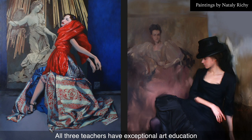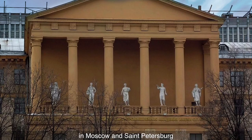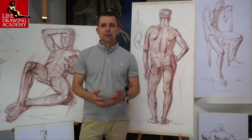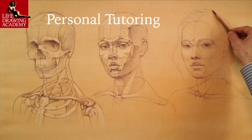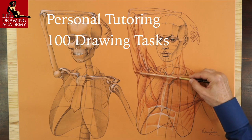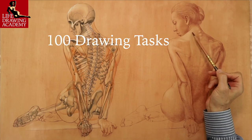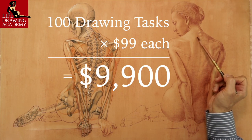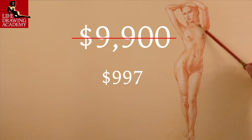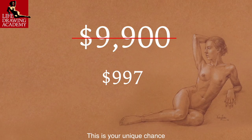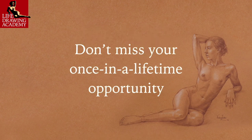All three teachers have exceptional art education and spent many years practicing and teaching art. The drawing techniques and methods taught are the same as students learn in the best art academies in Moscow and St. Petersburg. You can also apply for the Life Drawing Academy correspondence course for one-on-one personal guidance, 100 drawing tasks with in-depth instructions, critiques, and advice on improvement — valued at $9,900 but offered for only $997 for a limited number of students. When the places are filled, enrollment will be suspended or the price will return to its real value. Don't miss your once-in-a-lifetime opportunity. Enroll now.